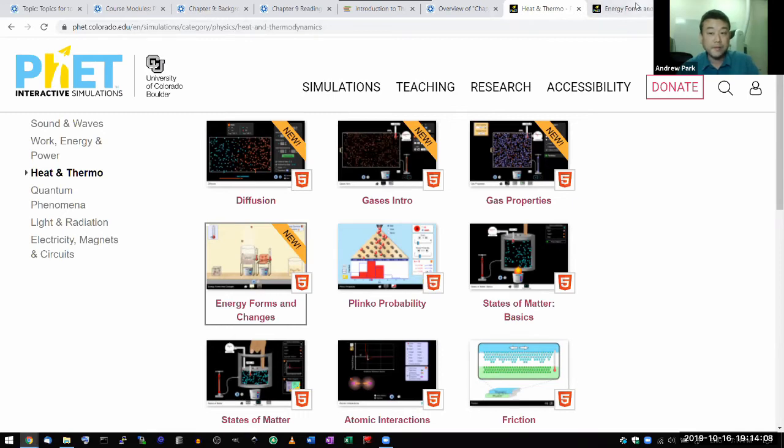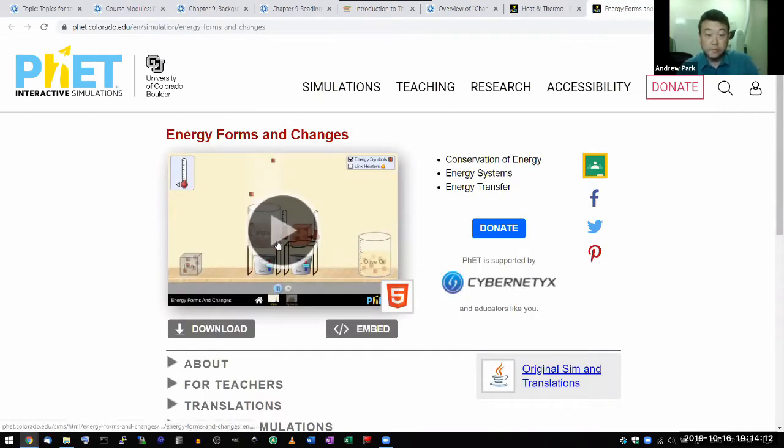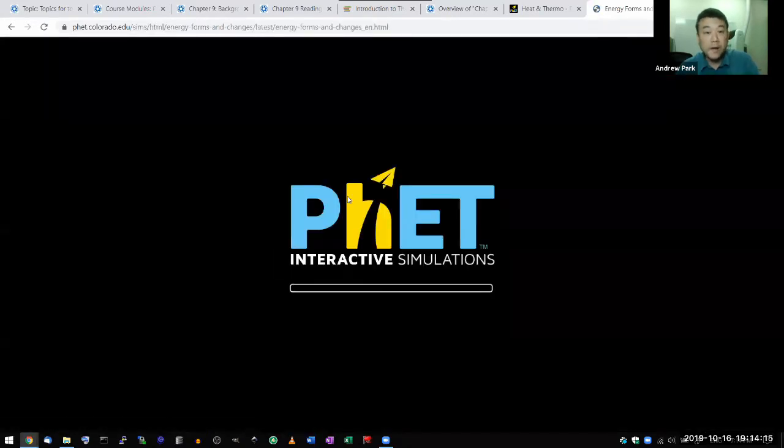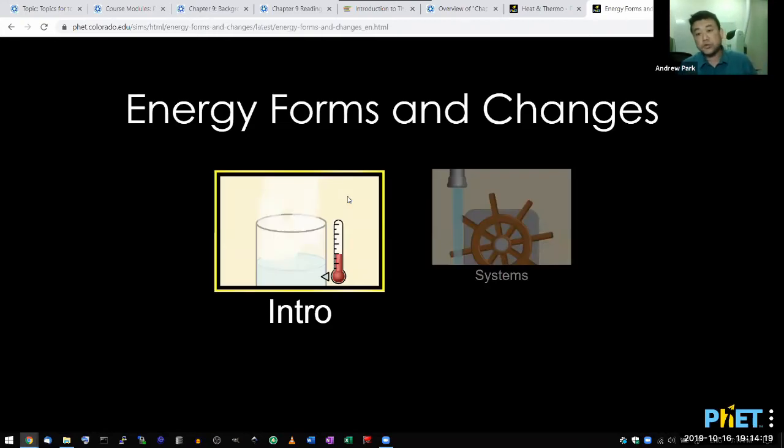Once you're on this website they also have math and other materials. I wanted to use this energy forms and changes simulation to talk about different forms of energy. Because up until Unit 2, we quite deliberately limited ourselves to mechanical energy, that is kinetic energy and a few forms of potential energy. The defining characteristic of energy is that it's a conserved quantity. When mechanical energy changes form into something else that's not mechanical energy, we define new forms of energy so that the total energy is always conserved.